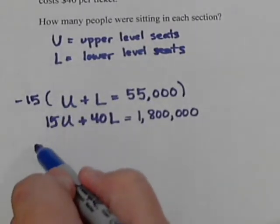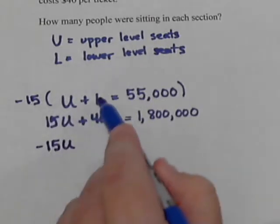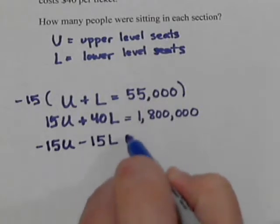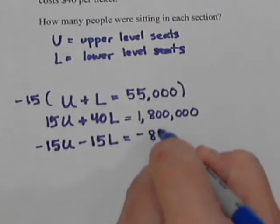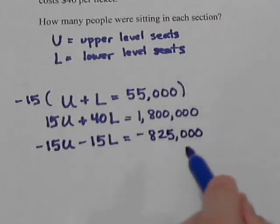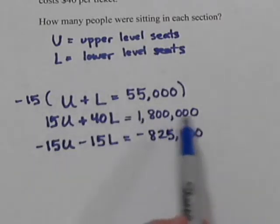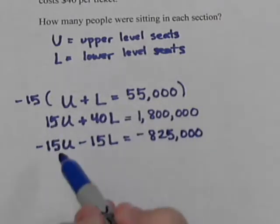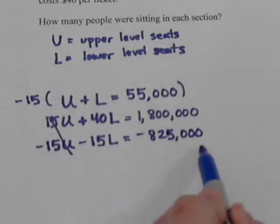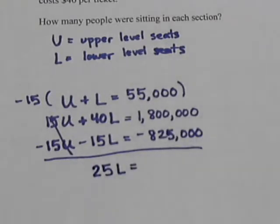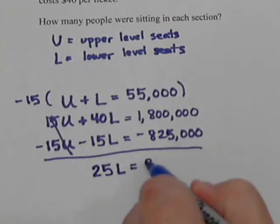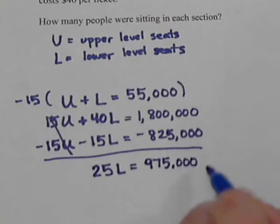Negative 15 times U is negative 15U. Negative 15 times L is negative 15L. And negative 15 times 55,000 is negative 825,000. Since we're only multiplying one equation, we leave the second one as is. Now we're ready to cancel. The 15U terms cancel out completely. 40 minus 15 gives us 25L. And 1,800,000 minus 825,000 leaves us with 975,000.